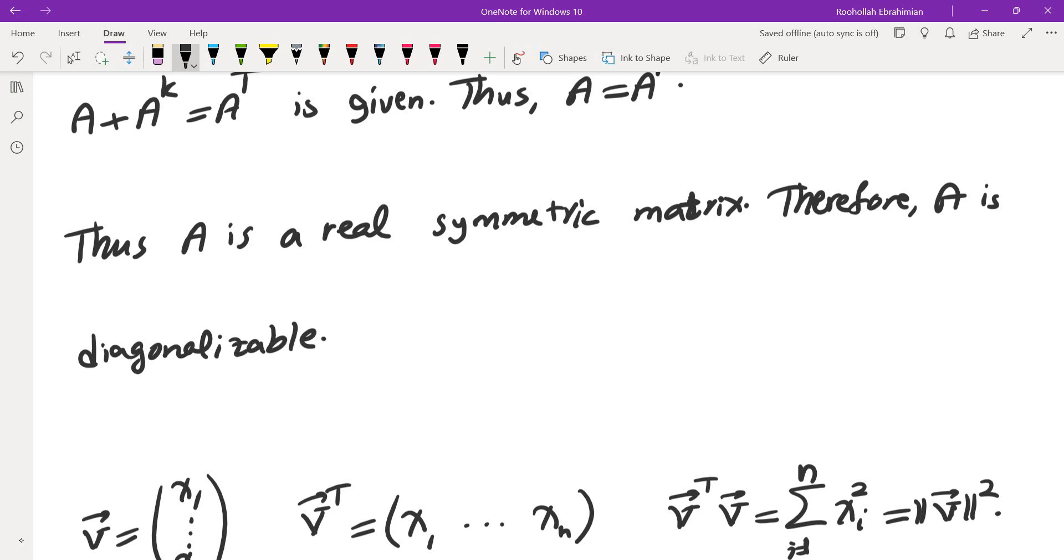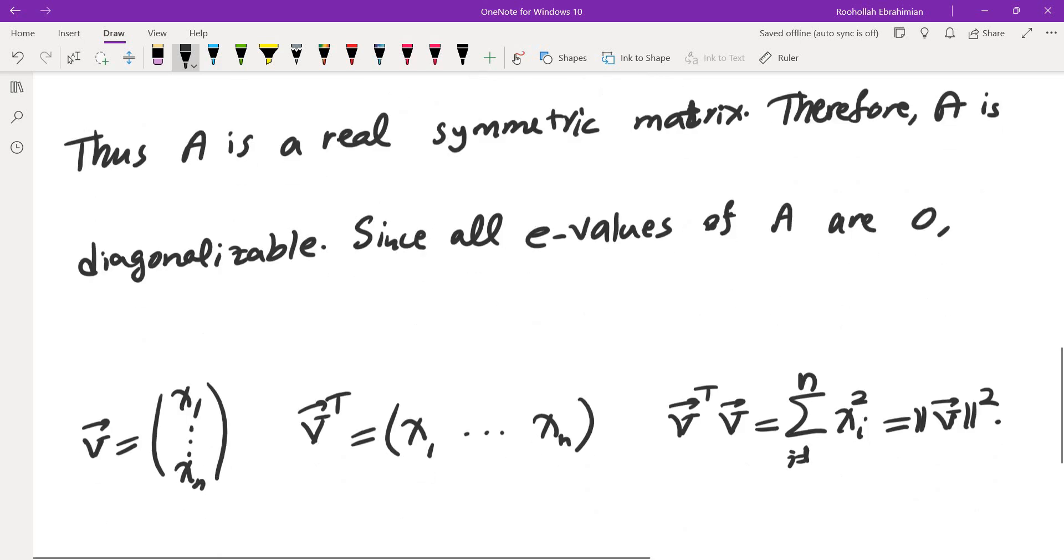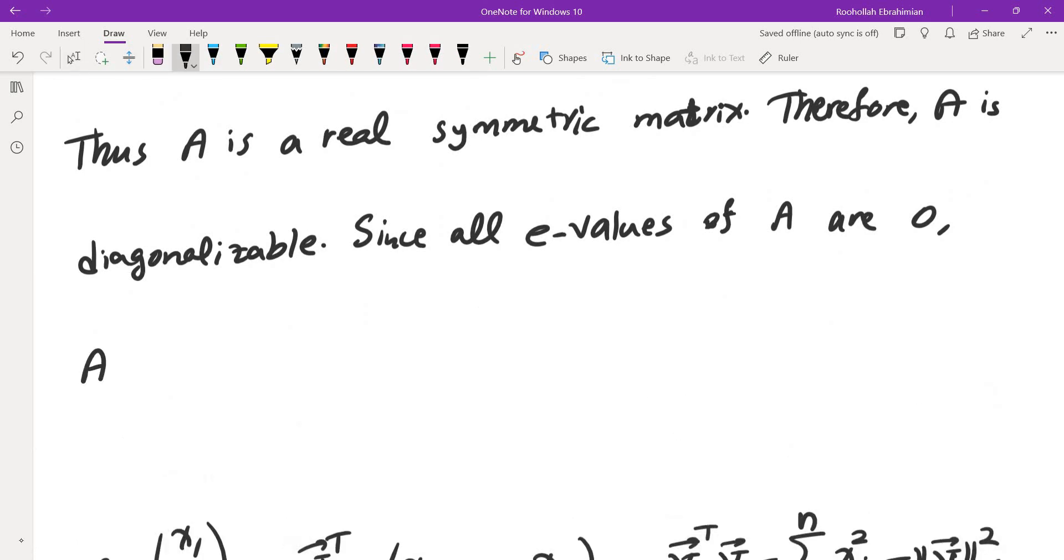However, we just showed that all eigenvalues of A are just zero. Since all eigenvalues of A are zero, A becomes P, a diagonal matrix, but all of the elements in the diagonal are zero, P inverse, which is zero. And this means A is equal to zero.